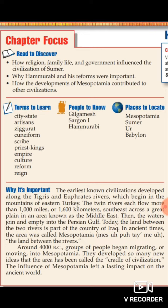The people we need to know are Gilgamesh, Sargon I, Hammurabi, and the Code of Hammurabi — very important. Places to locate: Mesopotamia, Sumer, Ur, and Babylon.